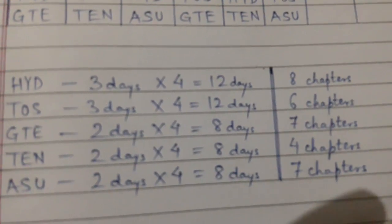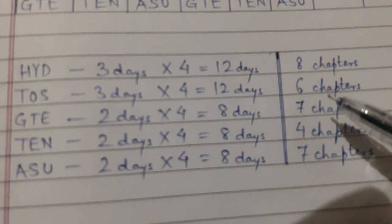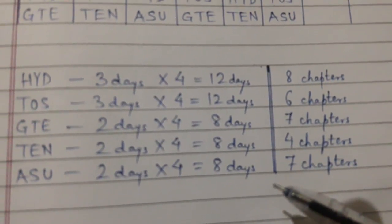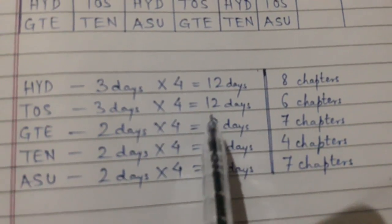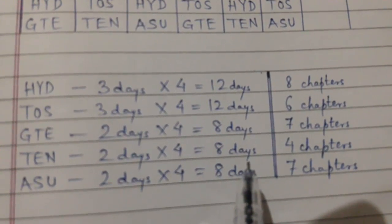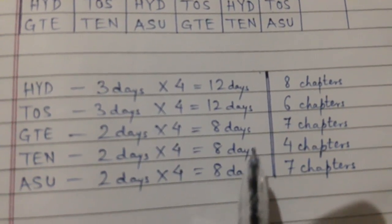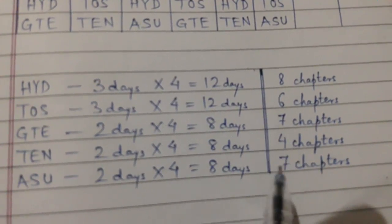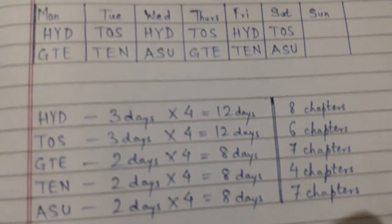The chapter counts are: Hydraulics has 8 chapters, TOS has 6, GTE has 7, TEN has 4, and ASU has 7. With the number of days allocated, roughly one chapter can be completed per day. Once the full syllabus is covered, remaining days can be used for revision or catching up on any lagging subjects.